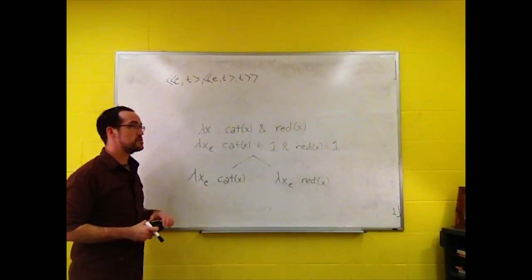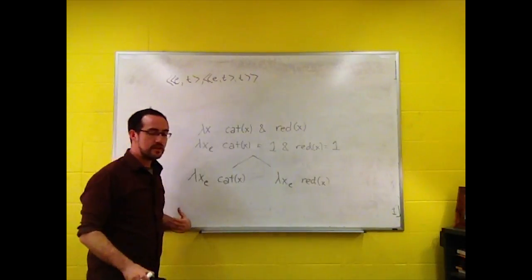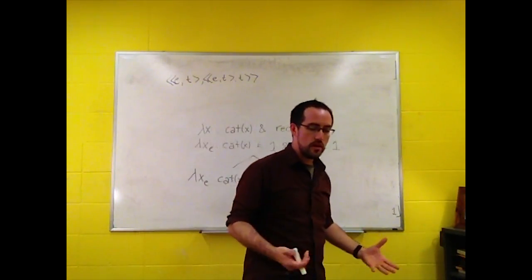So, what you end up with is this: lambda X, cat of X, and red of X. And, of course, most people don't even write that much. So, we end up with lambda X, cat of X, and red of X, and that works out as well. Everyone knows what that means.